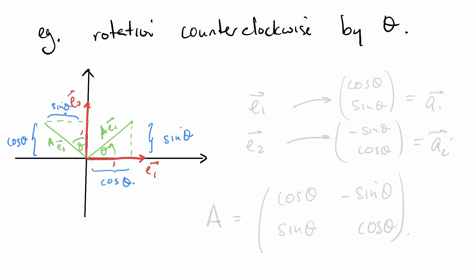What does this mean? It means that E_1, the vector, gets sent to (cos theta, sin theta), and that means this is A_1. E_2, the vector, gets sent to (-sin theta, cos theta), and that means this is going to be the vector A_2.